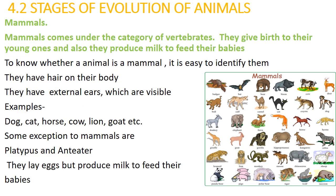Mammals come under the category of vertebrates. They give birth to their young ones and also produce milk to feed their babies. To identify whether an animal is a mammal, they have hair on their body and visible external ears. Examples include dog, cat, horse, cow, lion, and goat. Some exceptions to mammals are the platypus and anteater — they lay eggs but produce milk to feed their babies.